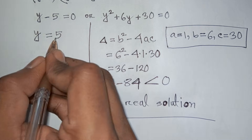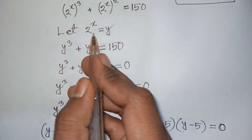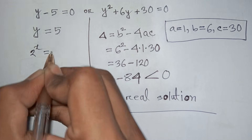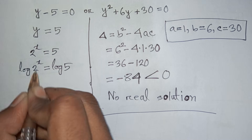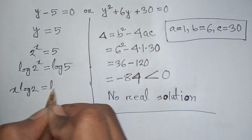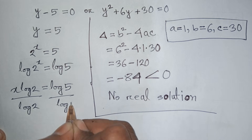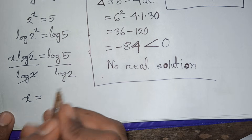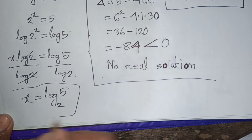From y - 5 = 0, we get y = 5. Remember that y means 2^x, so 2^x = 5. Applying log to both sides: log(2^x) = log 5. The power x moves to the front: x·log 2 = log 5. Dividing both sides by log 2, x = log 5 / log 2 = log₂5. This is the final answer.